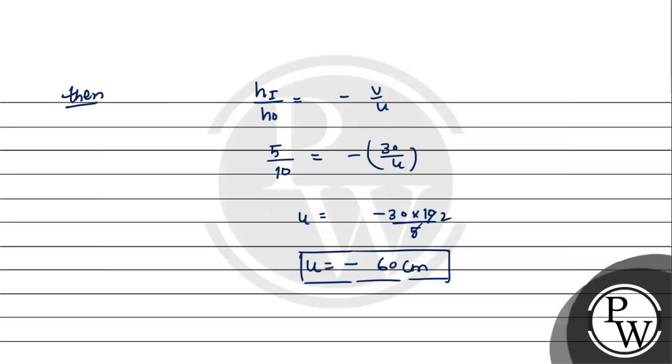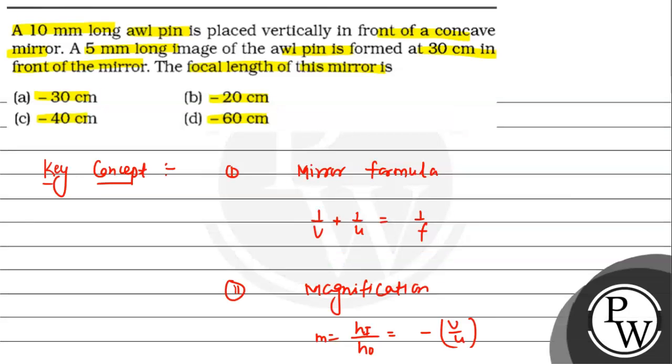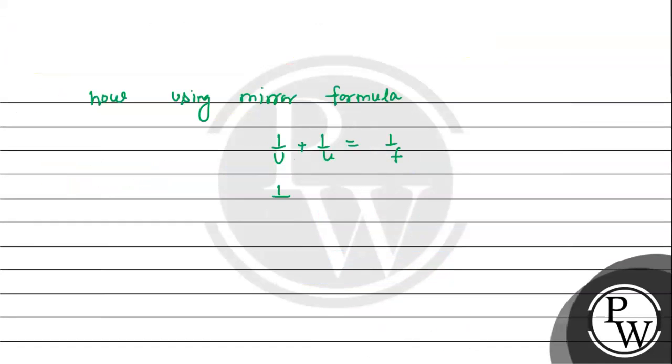Now using mirror formula: 1 upon V plus 1 upon U equals 1 upon F. 1 upon V, V is given as 30 cm in front. Front means sine negative, so minus 30. Plus U already has minus sign, so minus 60 equals 1 upon F.